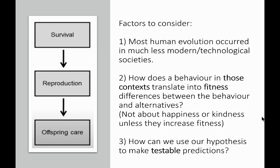It's important to consider the following factors too. Most human evolution occurred in much less modern or technological societies, and we need to constantly remind ourselves of that when we consider evolutionary psychology. How does behaviour in those contexts translate into fitness differences? Remember, it's not about happiness or kindness of an individual unless they happen to increase fitness as well. Behaviours that increase fitness are the ones that would be passed on if they have a genetic component to them.